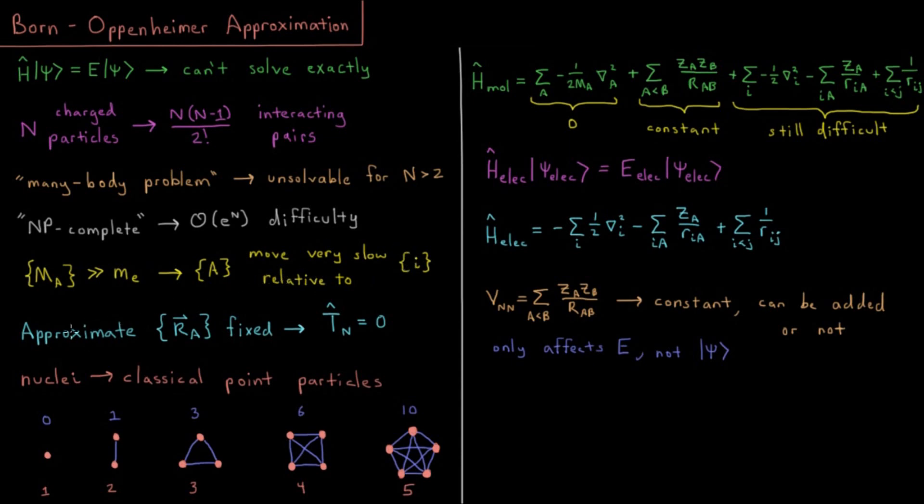So what we're going to do is approximate that the positions of all of the nuclei are fixed relative to the electrons. This means that we're going to treat the kinetic energy of the nuclei as being zero because they can't have kinetic energy if they're not going anywhere. If they're fixed, they can't move, no motion, no kinetic energy.